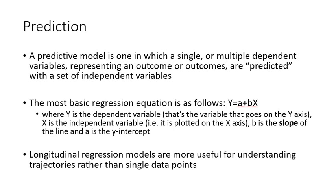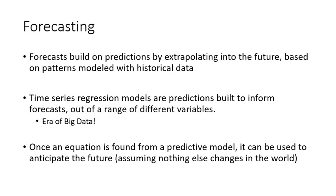The usefulness of a predictive model is that it gives us an equation. When we move on to forecasting, the equations become important because as we extrapolate from predictive models into the future, we don't have future data — that's impossible. We can't collect something that hasn't happened yet, but we can use our equations to anticipate how things are going to change. That's more effective if we have longitudinal predictive models from longitudinal regression. Essentially, the basic idea of forecasting is that once an equation is found from a predictive model, it can be used to anticipate the future.